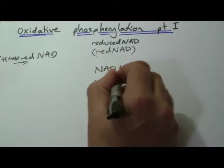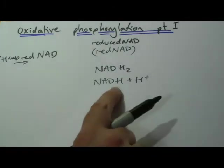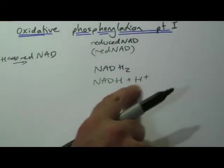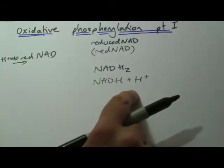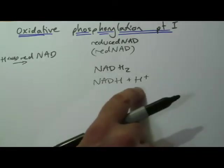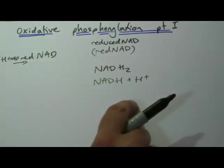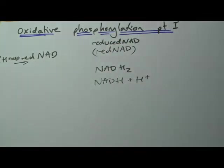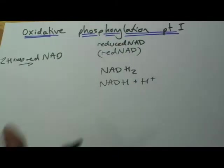You'll also sometimes see it written, I suppose a bit more technically correct, like that. You might think, well hang on, is it two hydrogens or not? Where's this extra hydrogen gone? It doesn't matter where it's gone is the sort of unsatisfactory answer. If you want to look it up and see where it actually goes then fine, but I think sticking with just calling it reduced NAD like this will be fine for us. We'll stick with that, we'll call it reduced NAD.